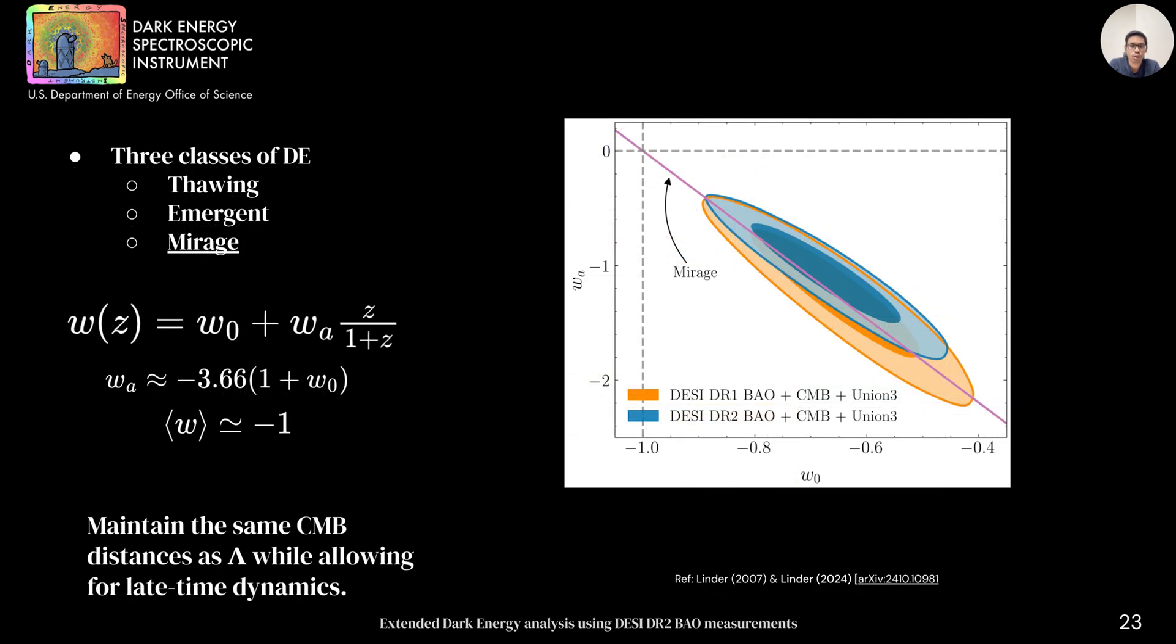The last class that we explore is the mirage class. This is more of a phenomenological class where we want to maintain distance to the CMB as in lambda CDM but allow for the late time dynamics giving us a mirage of constant w that we see in the data. On the right, you could see this is also roughly the direction where our w0wa constraints lie in DAISI DR1 and DR2.